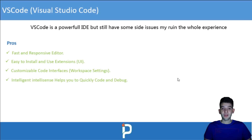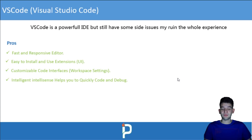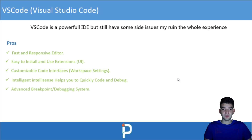IntelliSense in VS Code helps you find the files you're importing or exporting, where a class is coming from, when to call something, and plenty of other things. It can also help hugely with debugging. You can jump from one file to another, import a section of a file into a currently open file, edit it quickly, save it, and continue your work.